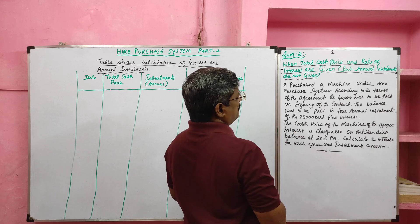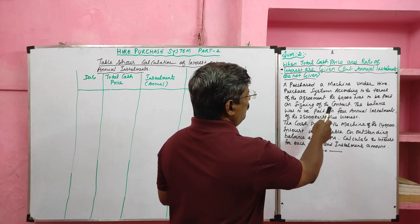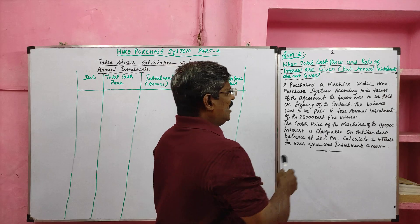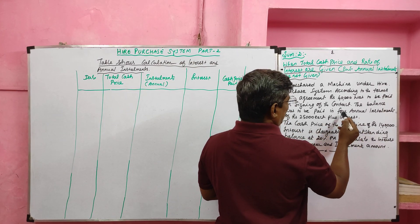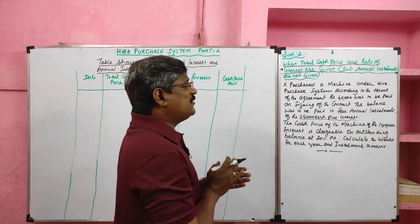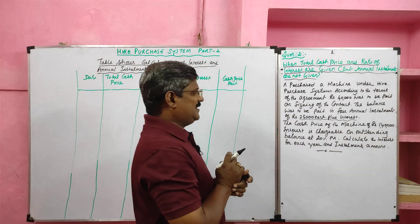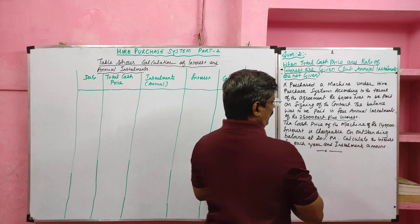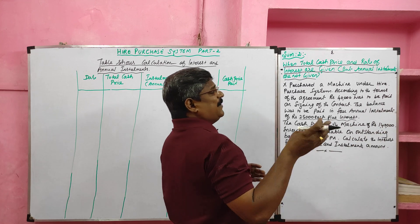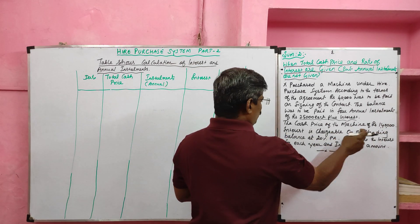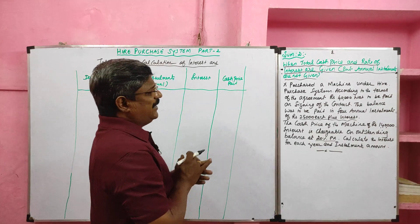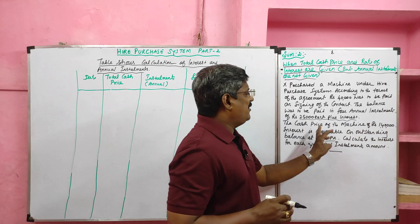X purchased a machine under the hire purchase system. According to the terms of the agreement, ₹40,000 was to be paid on signing of the contract. The balance was to be paid in four annual installments of ₹25,000 each, plus interest. The cash price of the machine is ₹1,40,000 — out of which ₹40,000 was paid on signing, and the balance of ₹1,00,000 is to be paid in four installments. Interest is chargeable on the outstanding balance at 20% per annum. Calculate interest for each year and the installment amount.